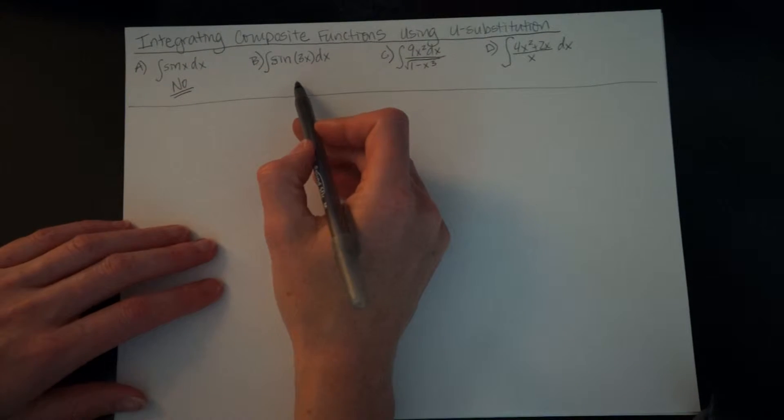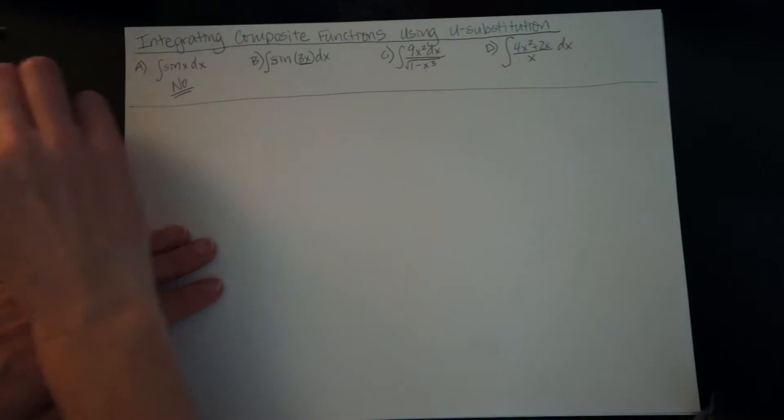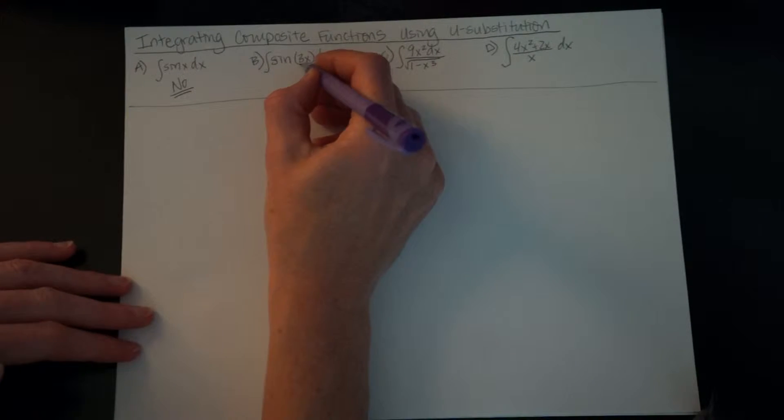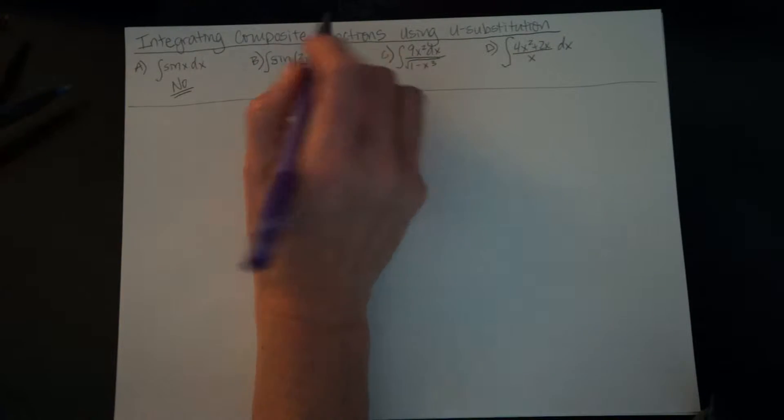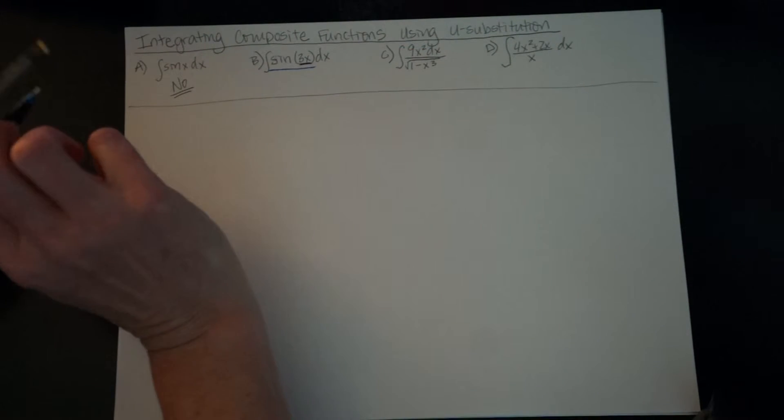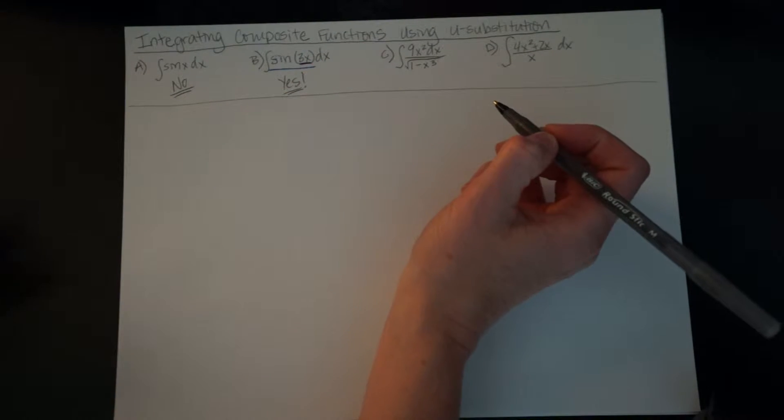So let's take a look at this next one. Very similar, except it says sine of 3x. This indeed is a composite function. This 3x is the innermost function and then it's part of or within the sine function itself. So this one is a yes. So that's recognizing those composite functions.